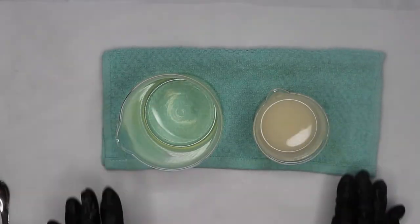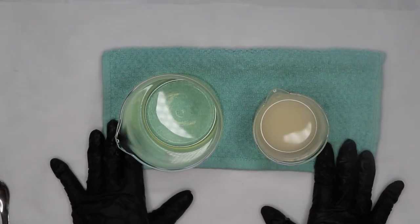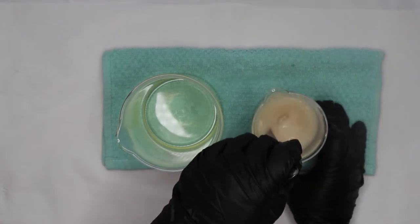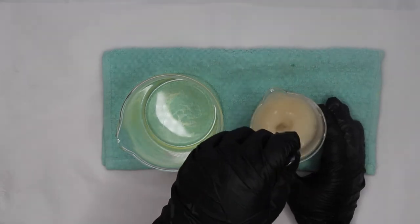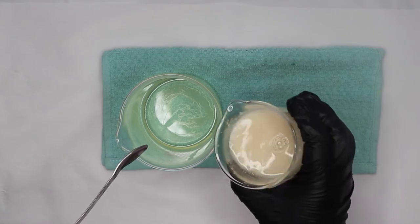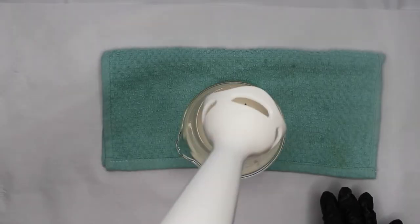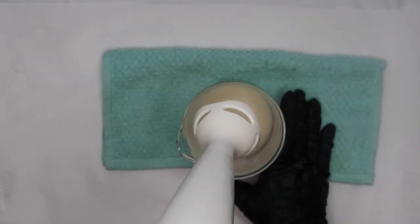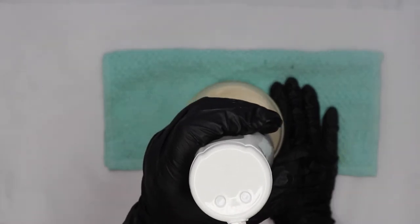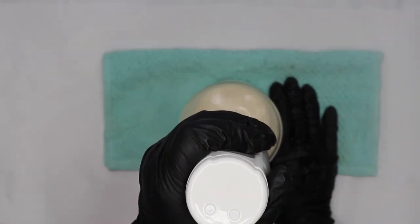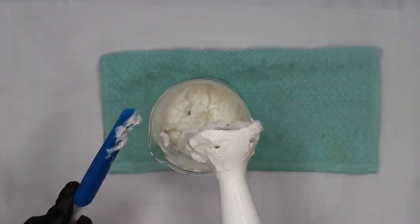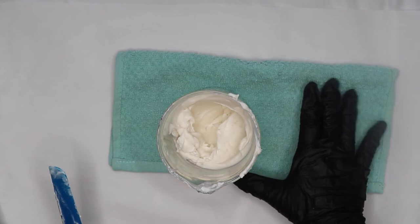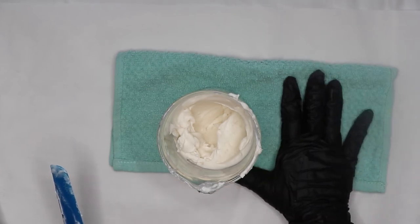Okay, I have removed my items from the double boiler. I am going to go ahead and stir this one more time just to make sure the colloidal oats are well dispersed. Okay, I will pour my water phase into my oil phase. I will go ahead and put my immersion blender inside and start blending in small bursts. Okay, I am just going to leave it here for a few minutes for it to cool down and we will be back.